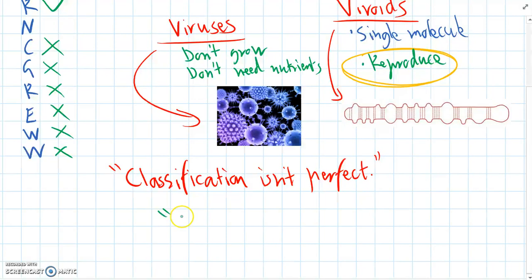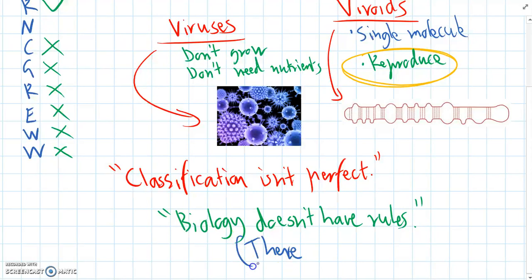The second thing to always remember is that biology doesn't actually have any rules. Even if there's a common rule that you think applies to most things, there will always be an exception. There will always be a living thing that breaks the rule. So these are some good ideas to remember as you continue learning biology.